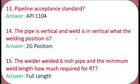Question 14: The pipe is vertical and the weld is in a vertical position — what is the welding position? The answer is 2G position. Question 15: A welder has welded a 6-inch pipe — what is the minimum weld length required for RT? The answer is full length.